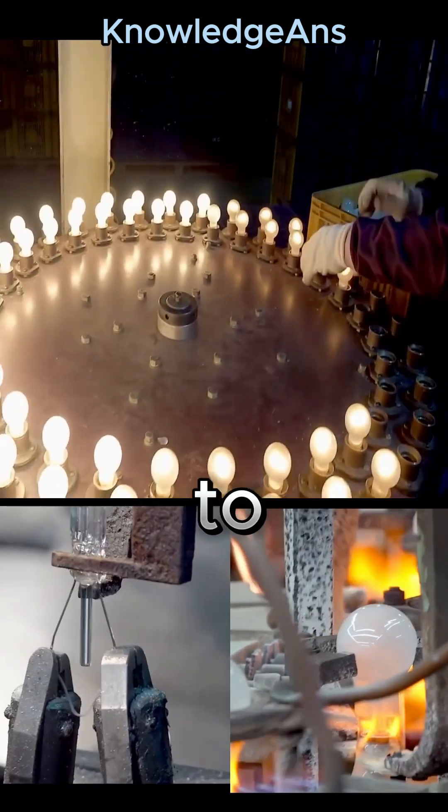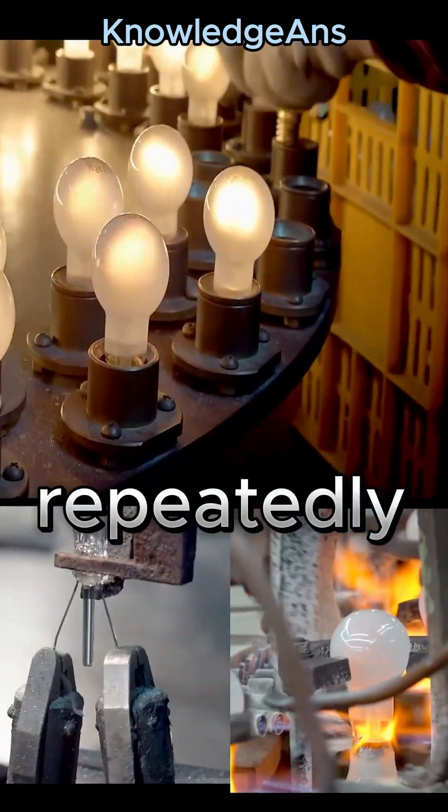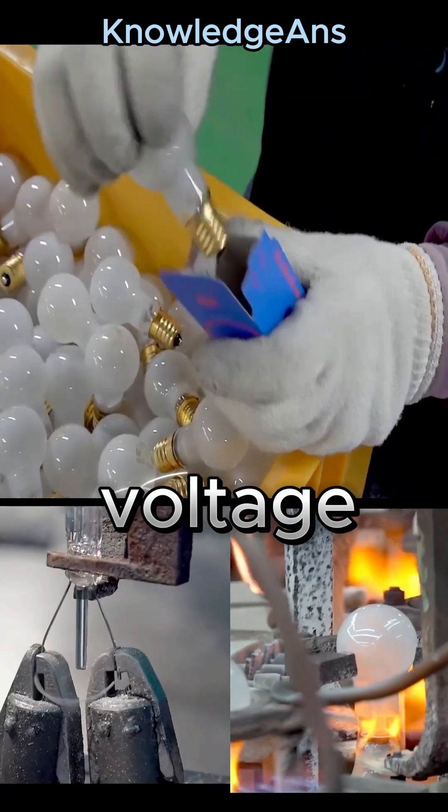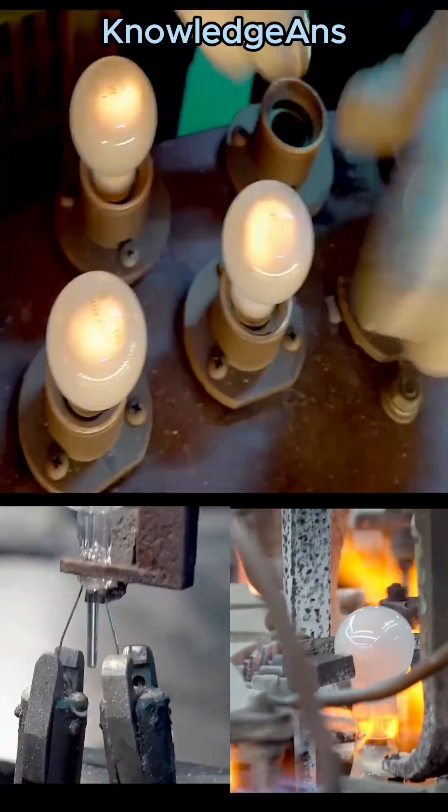The lamps are then subjected to a test called the flash test. It is the process of repeatedly lighting lamps with a voltage higher than the household electrical current to ensure its stability.